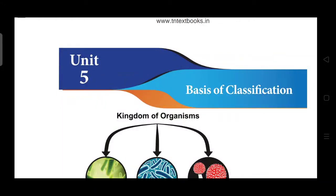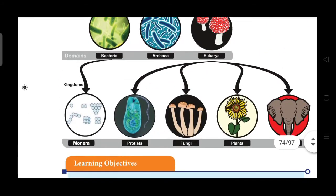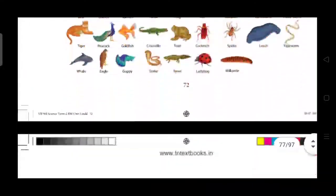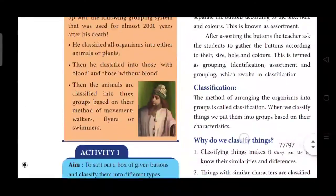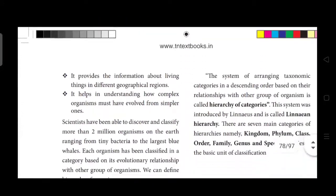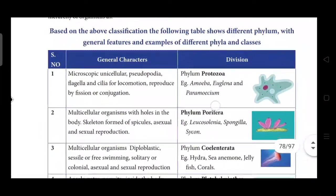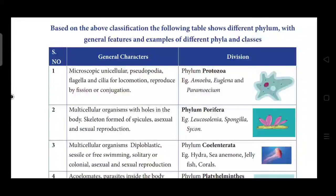Hi students, we are discussing Unit 5: Basis of Classification. In this lesson we discussed what is classification, the basis of classification, the need of classification, what is a dichotomous key, and finally the hierarchy of classification — the taxonomy hierarchy of categories.